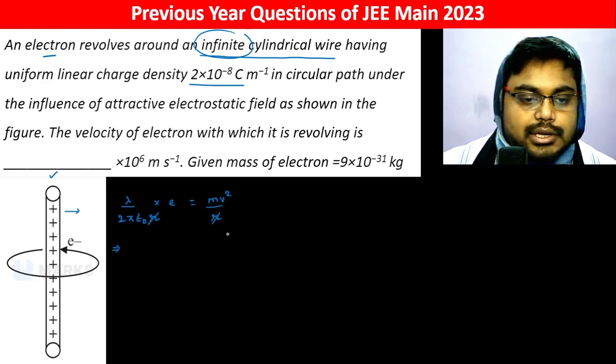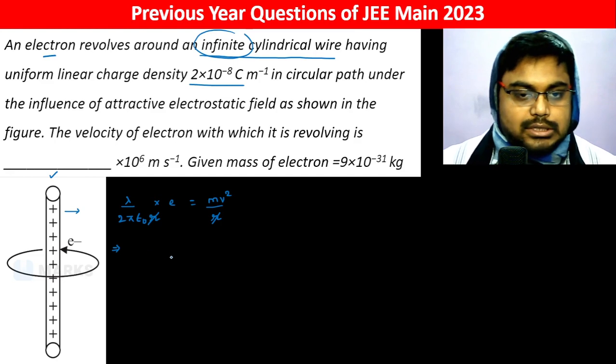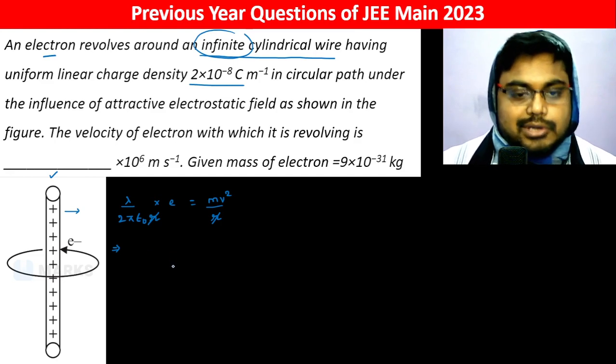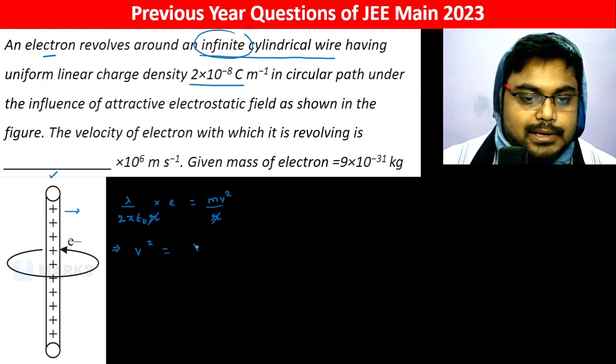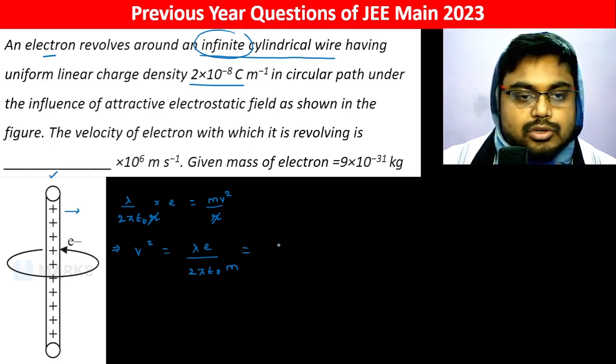R cancels out, so we can get the velocity. V² should be lambda times E divided by 2ε₀m. Lambda is 2×10⁻⁸.